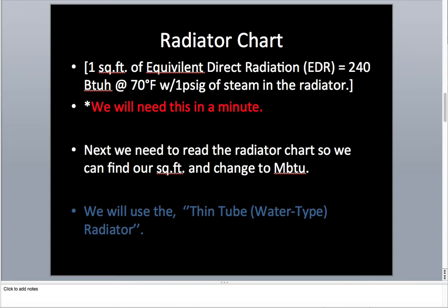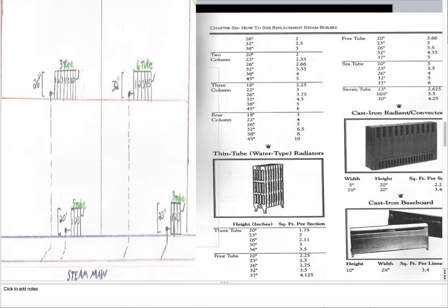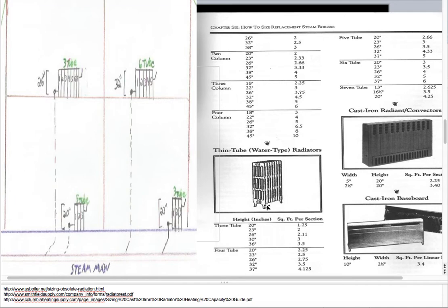Next we need to read the radiator chart so we can find out our square feet and change it to MBTUs, thousands of BTUs. We'll use this thin tube water type radiator in our example. So here we go. Here's your thin tube water type radiators. Here's your height in inches. It says how many tubes you're using. Three, four, five, six, seven. And then it tells you how many square feet per section. Each section is this way.